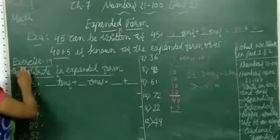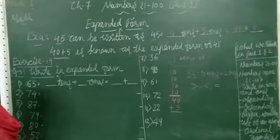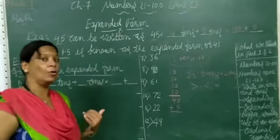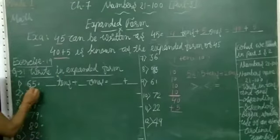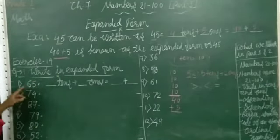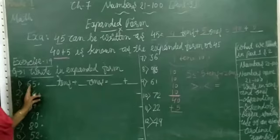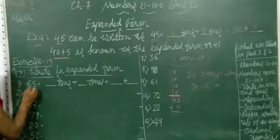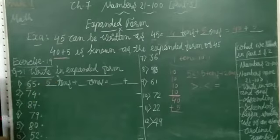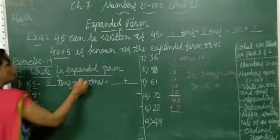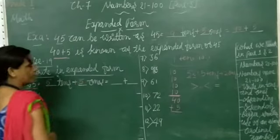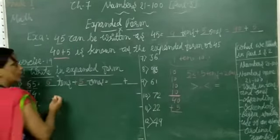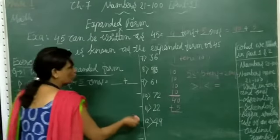Now exercise number 19 — write in expanded form. First number: 65. In 65, how many 10s and how many 1s? In 65, 6 10s and 5 1s. So 6 10s plus 5 1s. 6 10s means 1 10 equals 10 — so 6 10s equals 60.